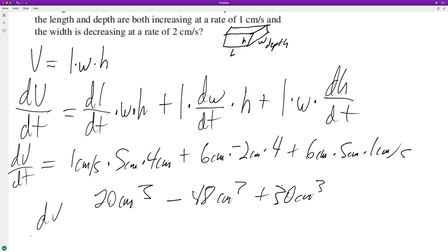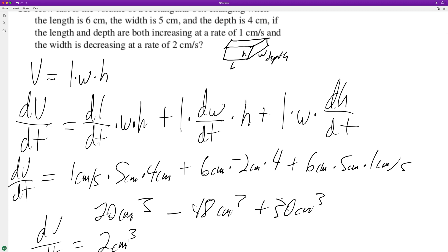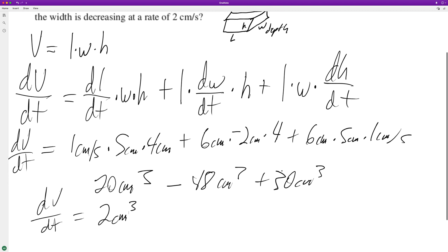And then dV/dt finally is equal to 52 cubic centimeters, based off the fact that you've got your length and depth increasing at 1 and your width decreasing by 2. So anyway, that's it. I hope that helped you out. Thanks for watching and have yourself a great day.